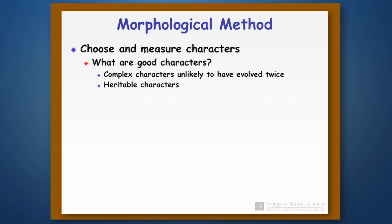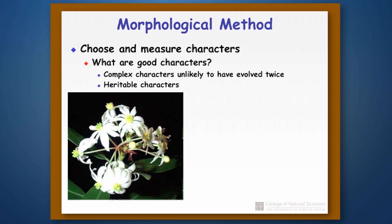We don't want characters that are features of an organism that won't be inherited. For example, if I separated out a group of people based entirely on skin color, that might seem reasonable, but it isn't — because people's skin color actually changes depending on how much sunlight they've been exposed to. On plants, we might measure various features about the flowers, such as number of petals or length of petals.